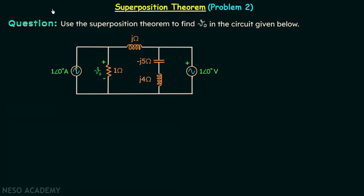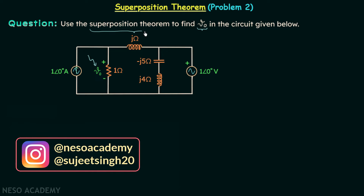In this presentation, we are going to solve problem number 2 on the superposition theorem. According to this problem, we are required to find voltage V0 using the superposition theorem. Before we move to the solution, I want you to analyze the given network.